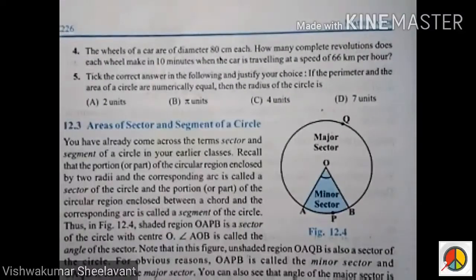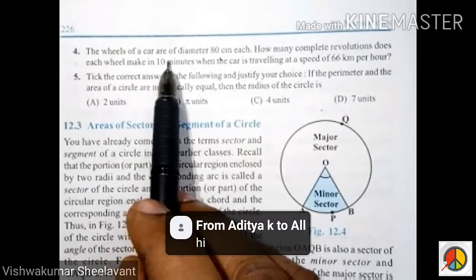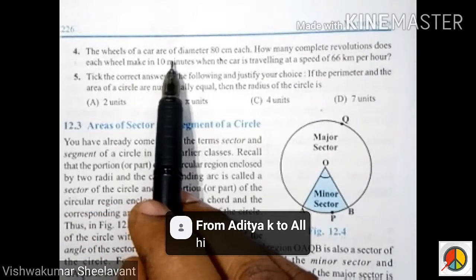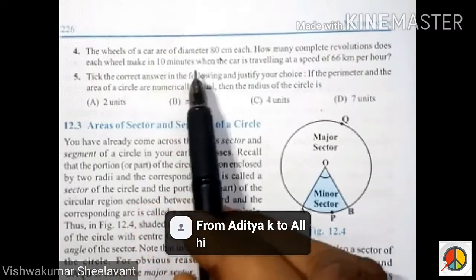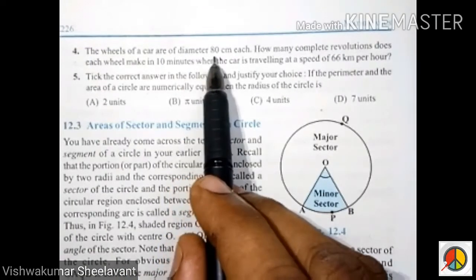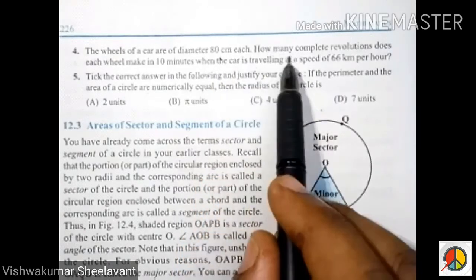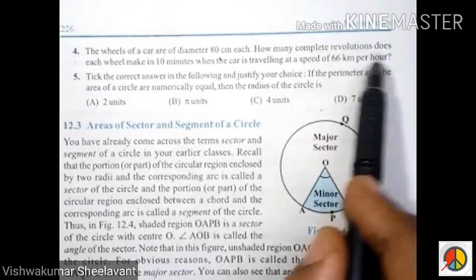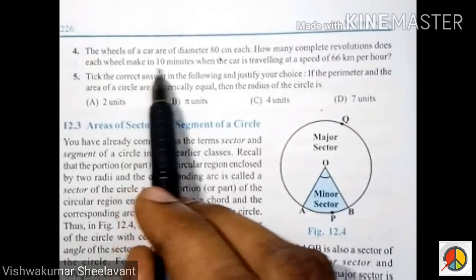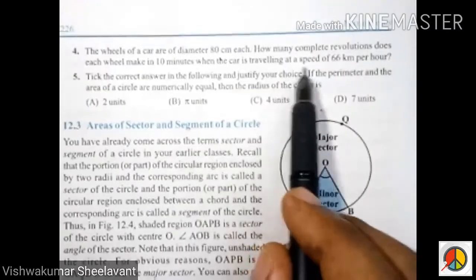Fourth question: The wheels of a car are of diameter 80 cm each. How many complete revolutions does each wheel make in 10 minutes when the car is travelling at a speed of 66 km per hour?